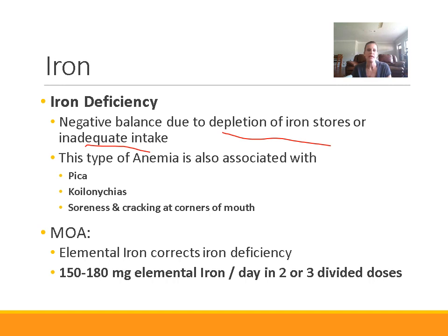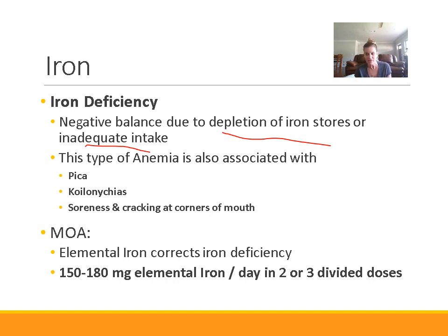Iron deficiency anemia is associated with some additional findings besides the anemia itself. It can be associated with pica — the hunger for odd things, like cravings for dirt, ice, or paper. The reason patients get these cravings is that those things could possibly be sources of the mineral they're deficient in. The body is really smart; if you're deficient in a certain vitamin or mineral, you can actually crave things that have that in it. Though it's not foolproof — ice, for example, doesn't have iron in it.